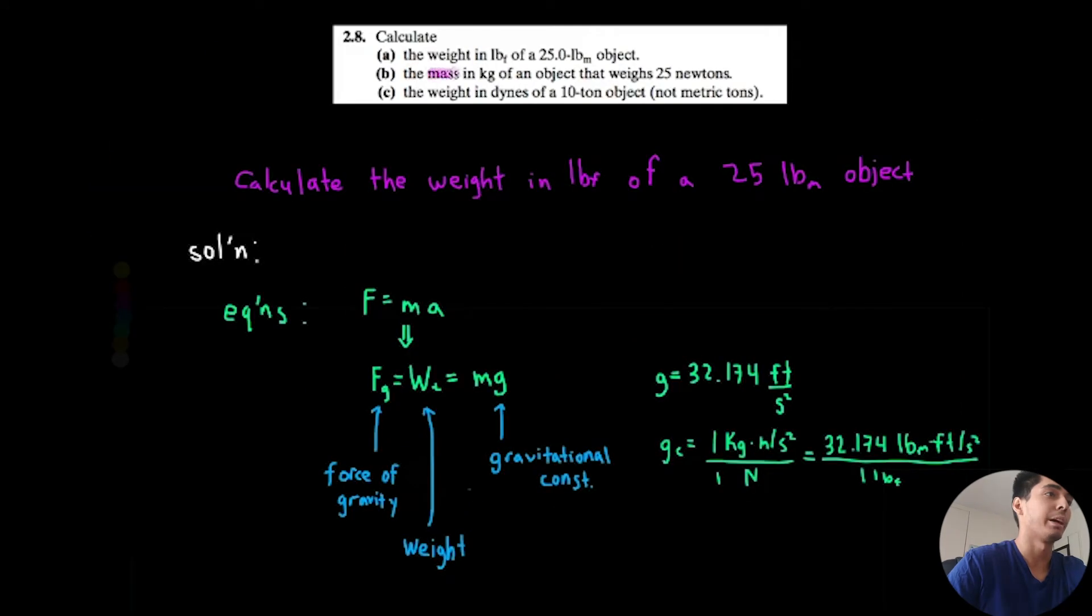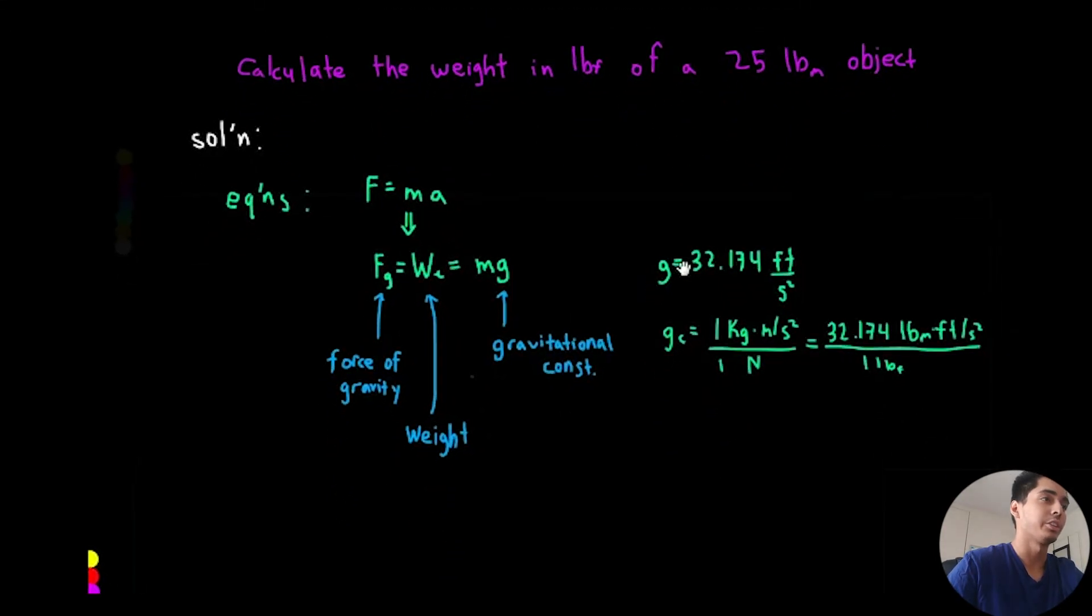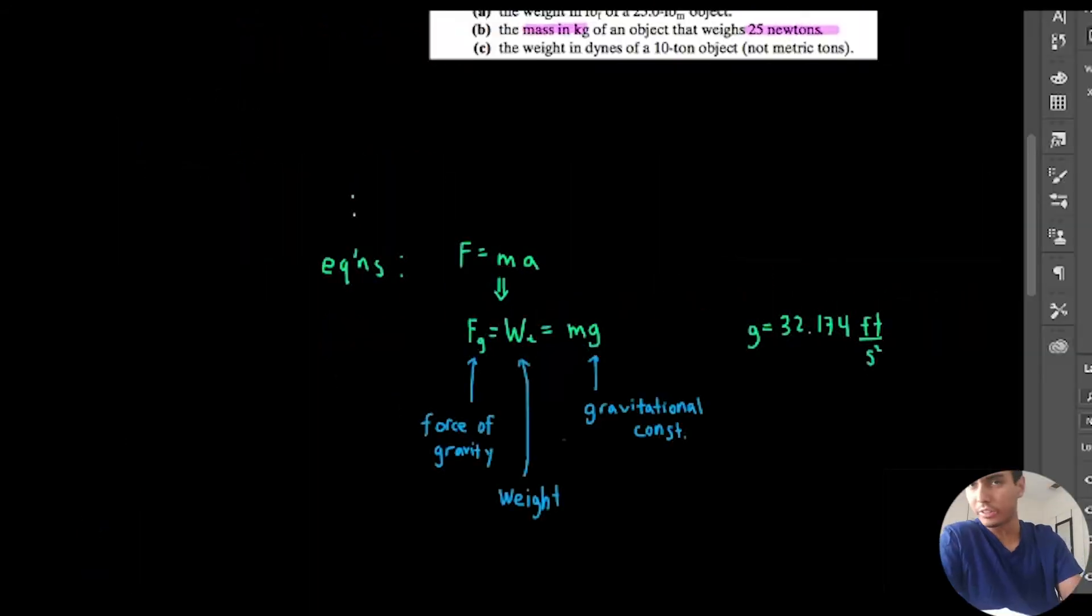Our next bad boy is to calculate the mass in kilograms of an object that weighs 25 newtons. So let's try this out shall we. Is it okay if I erase this? Did you guys copy it down? So now we want to solve for the mass given that the weight is 25 newtons.